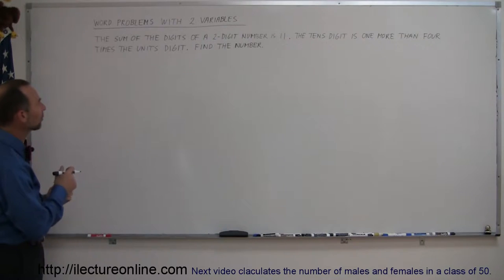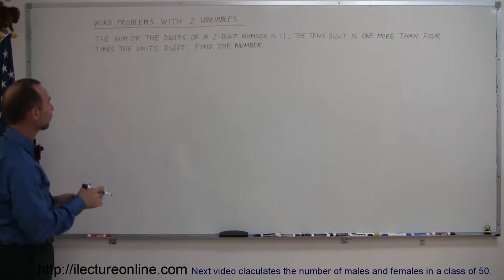The sum of the digits of a two-digit number is 11. The tens digit is one more than four times the units digit. Find the number.